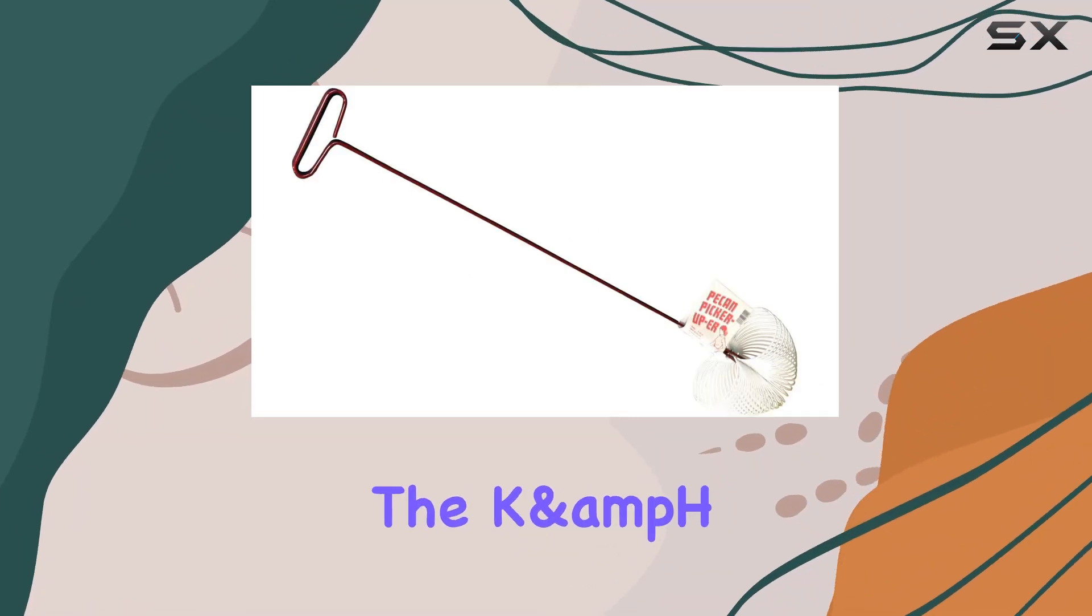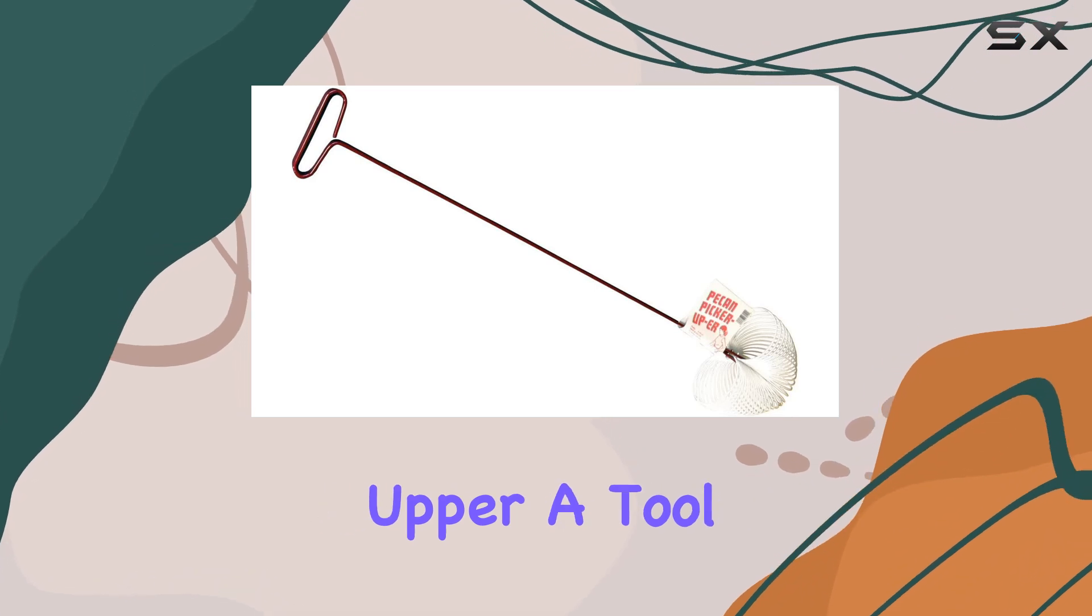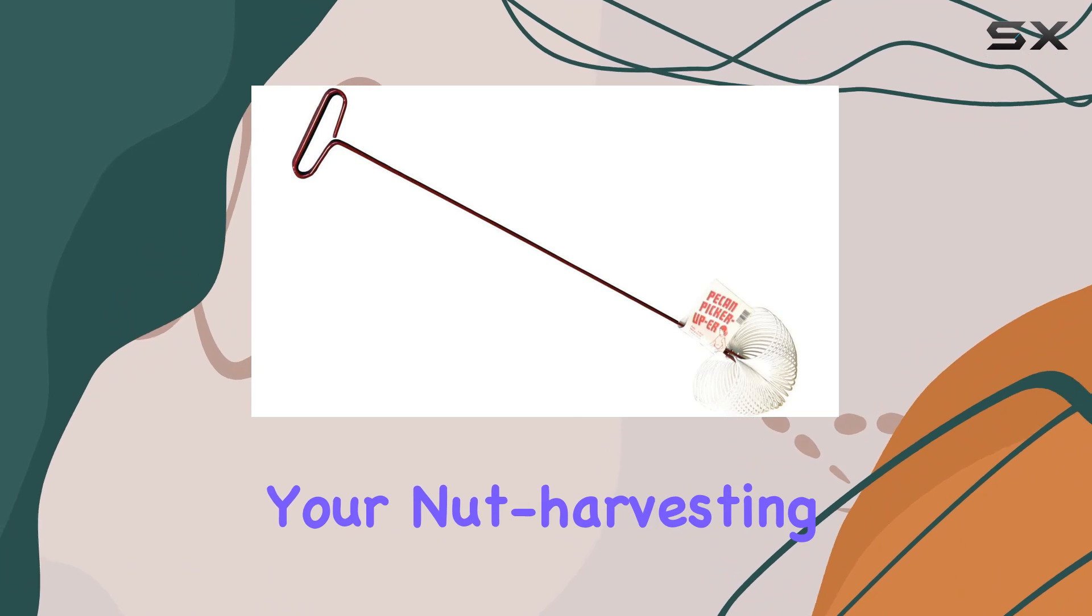Today, we're diving into the KNHH & K Company 701 Pecan Picker Upper, a tool that's designed to bring both comfort and durability to your nut harvesting tasks.